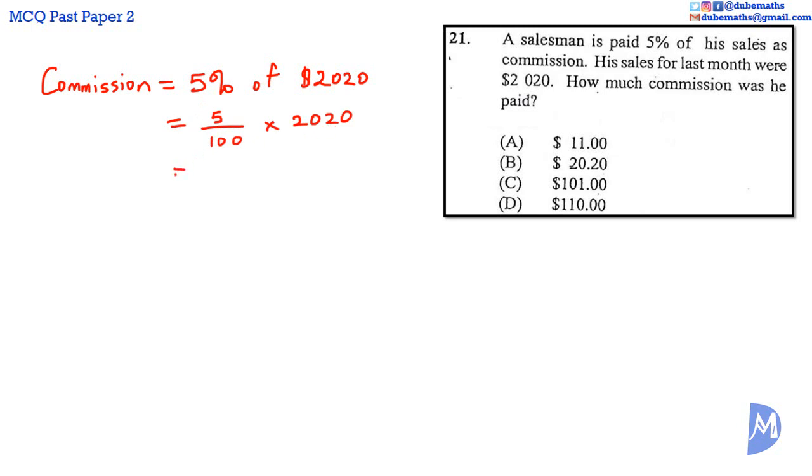Canceling: 5 into 5 is 1; 5 into 100 is 20.